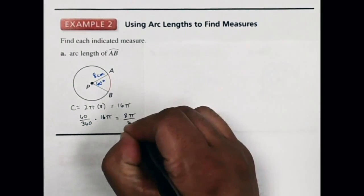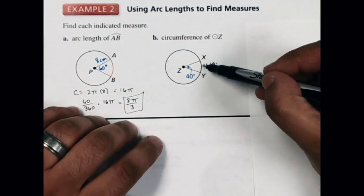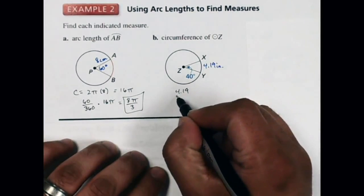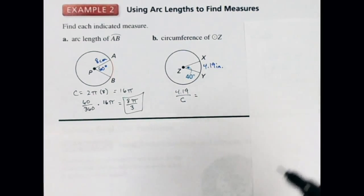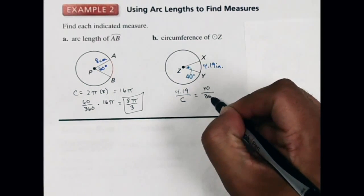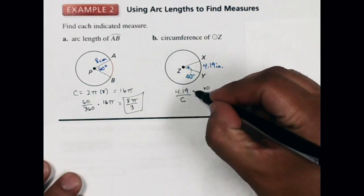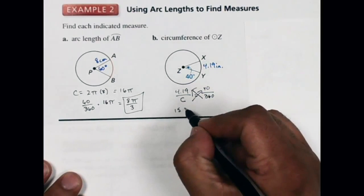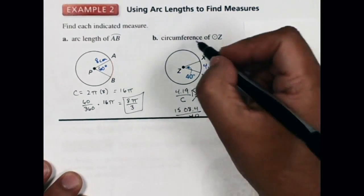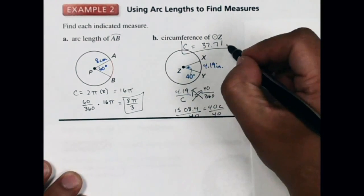For the next one, they gave me the arc length of XY as 4.19, which is proportionate to the angle of 40 degrees over 360. So: 4.19 over the circumference C equals 40 over 360. Cross-multiplying, 1508.4 equals 40C, and dividing by 40 gives a circumference of 37.71 inches.